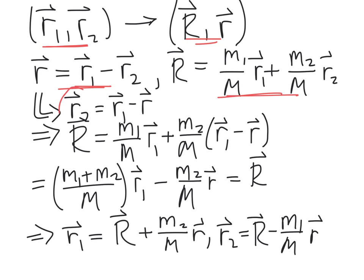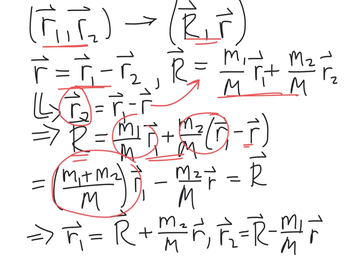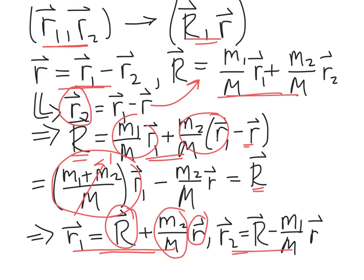That means we can rewrite the vector r2 as r1 minus little r. Plugging that into the center of mass expression, big R equals m1 over capital M times r1 plus m2 over capital M times r1, and then there's a minus r term. Combining those terms, m1 plus m2 over big M times r1 is just 1 times r1, giving us an expression for r1 in terms of capital R and little r, specifically r1 equals capital R plus m2 over big M times little r. There's a similar expression for r2.